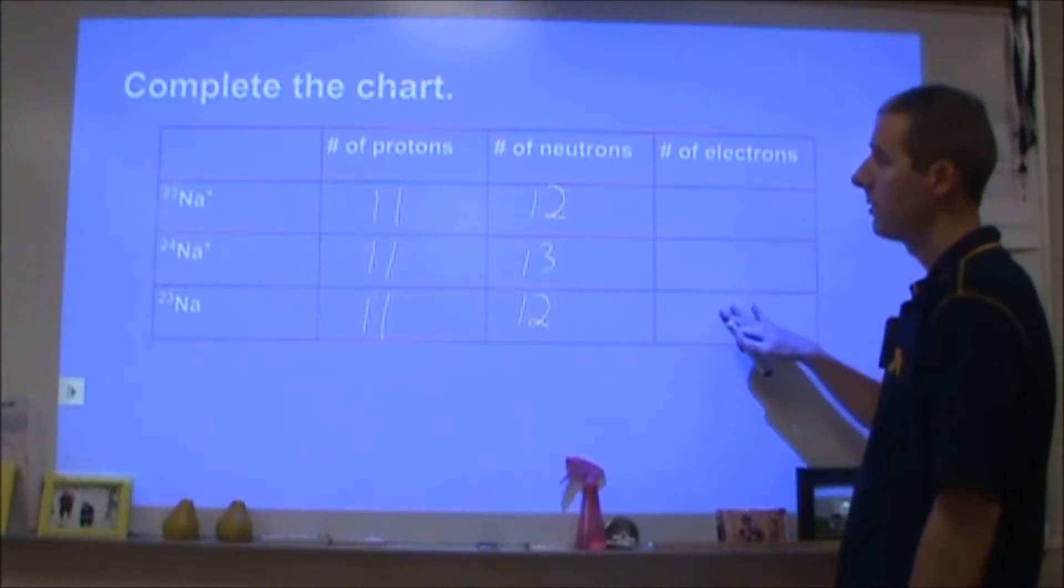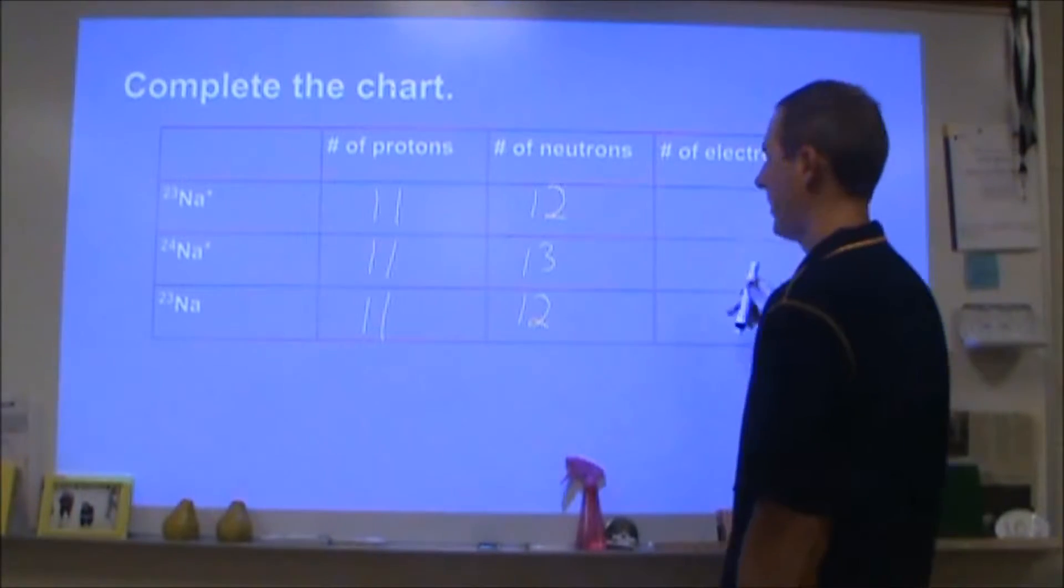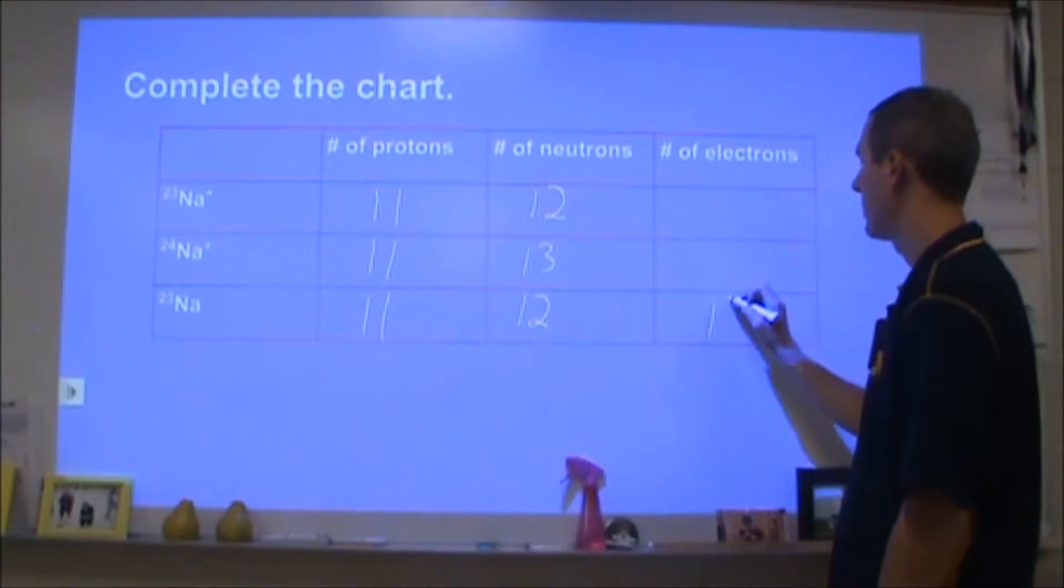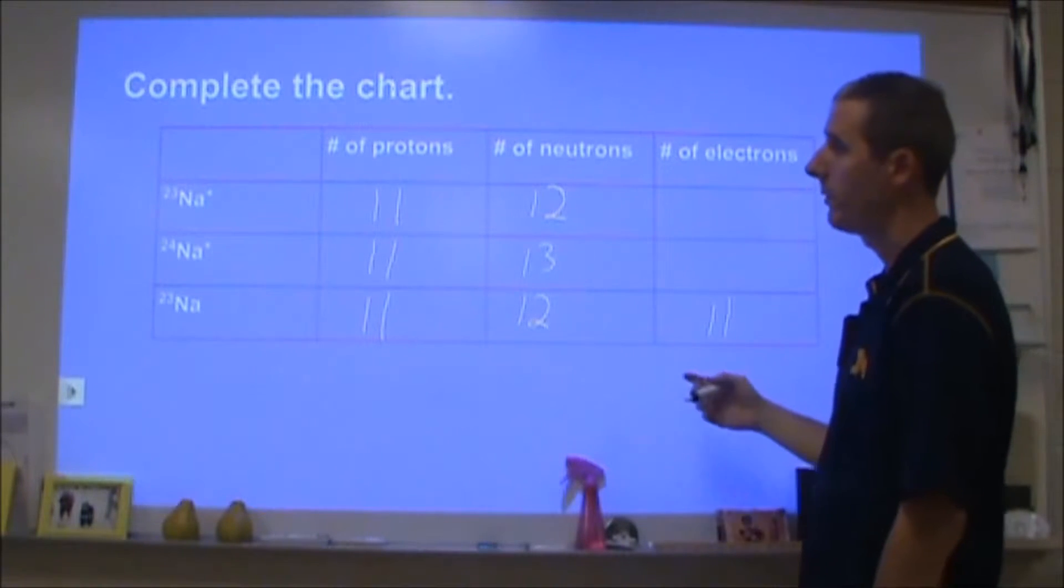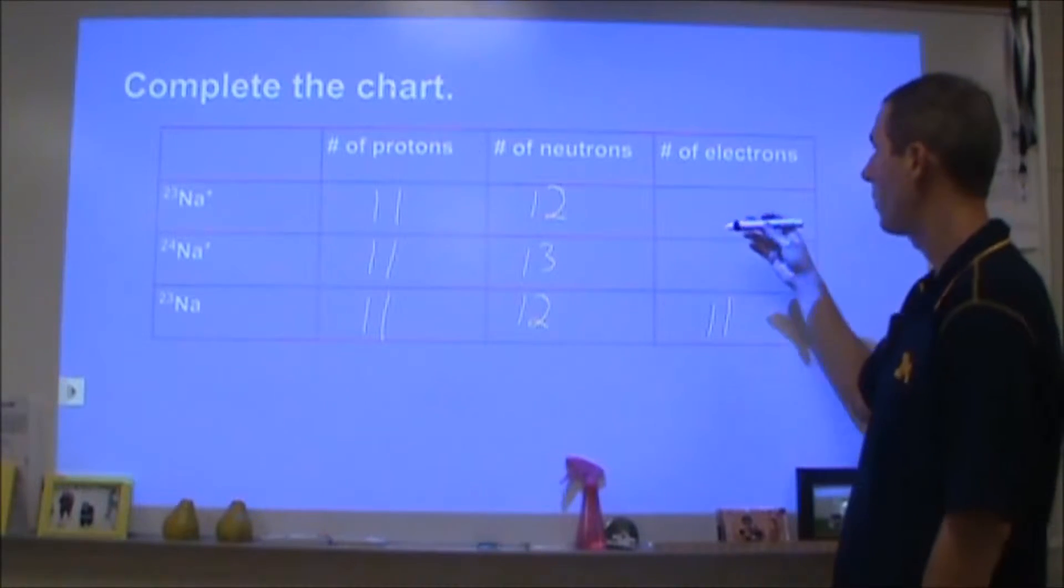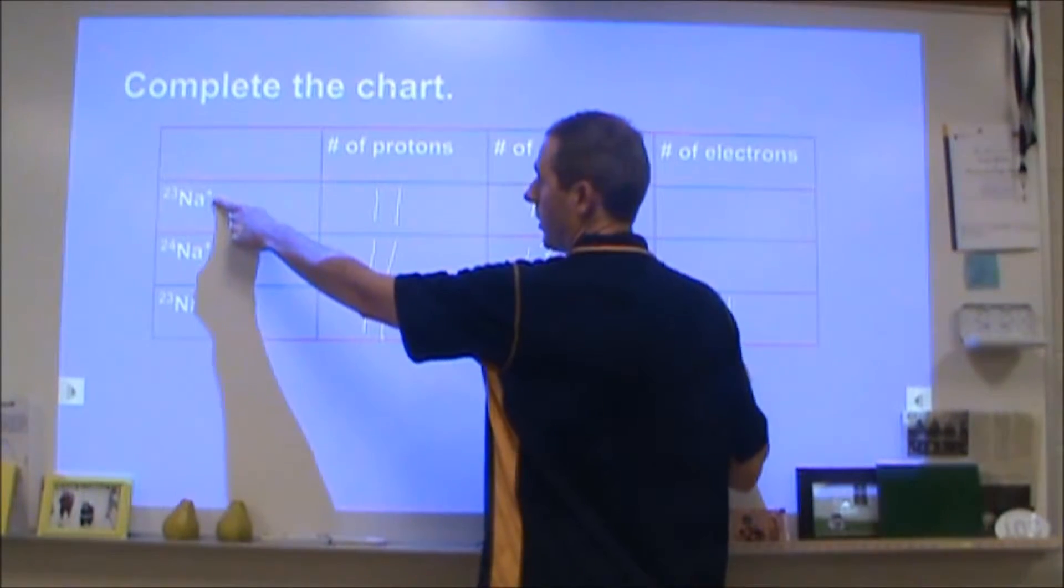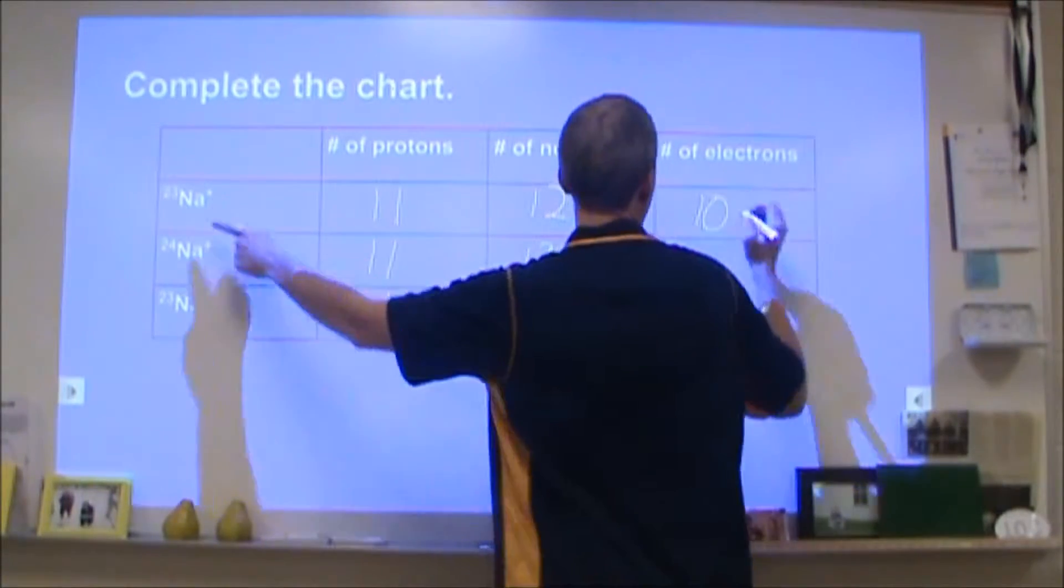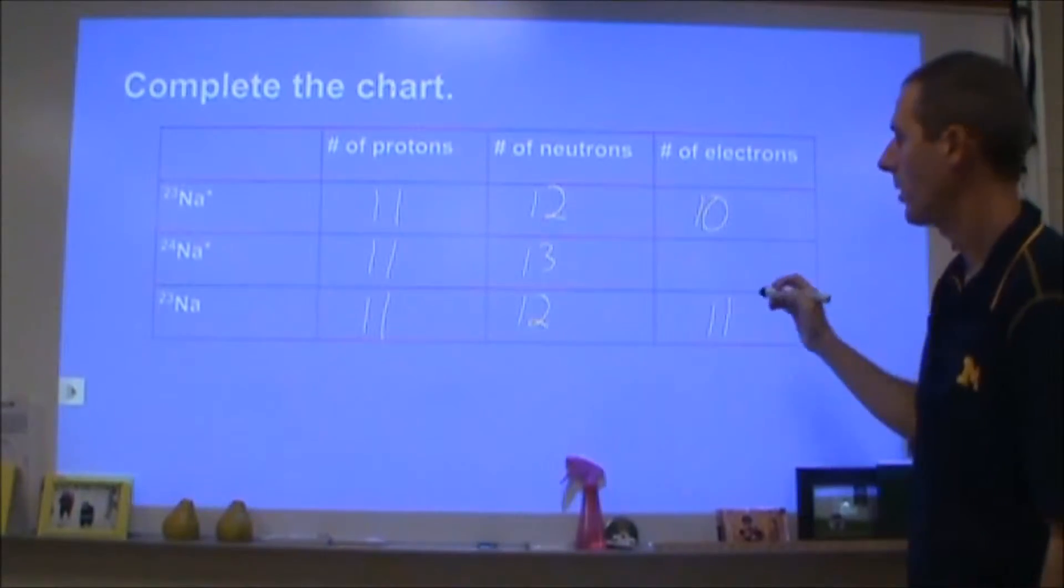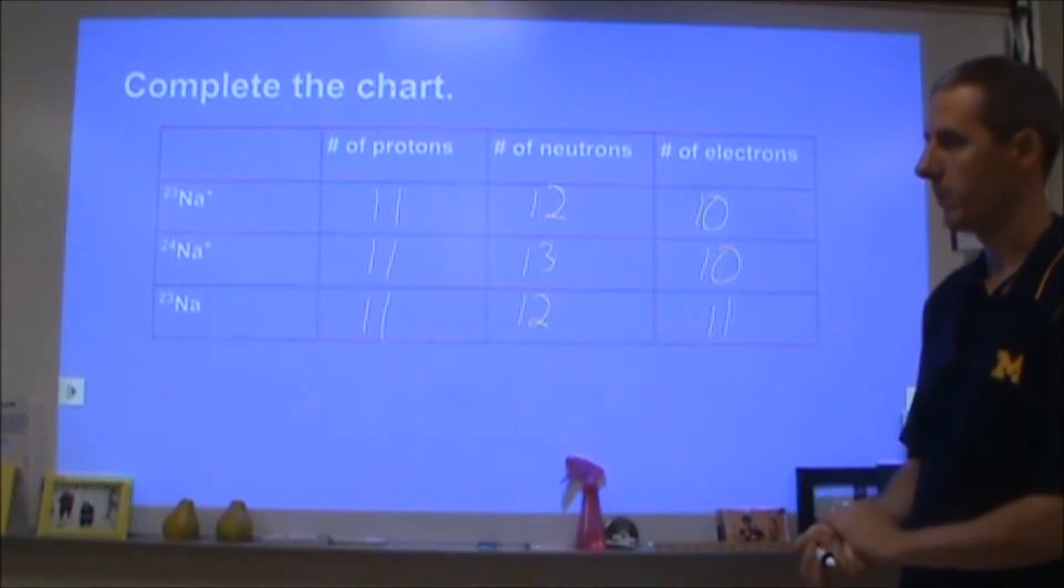For the electrons, all sodium atoms will have the same number of protons and electrons. All atoms will have the same number of protons and electrons. So this one will have 11, but the ions have had electrons removed. In this case they've had one removed, so we have one more proton than electron to give us a plus one charge. And likewise here, 10 electrons to give us a plus one charge.